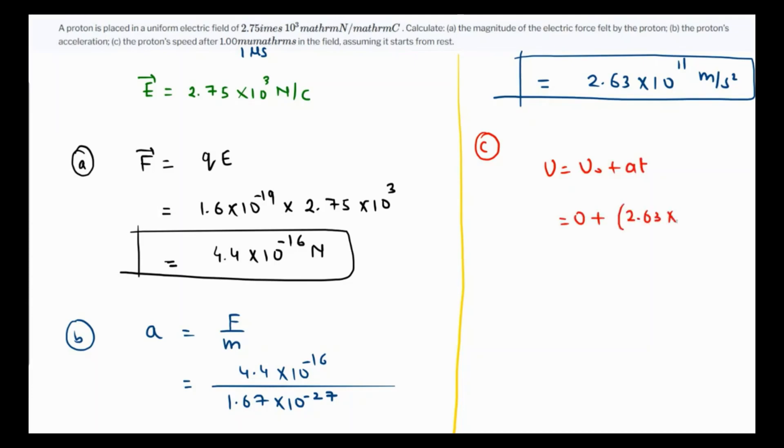The acceleration we just found is 2.63 times 10 raised to 11, and time is 1 microsecond, which is 10 raised to minus 6 seconds. So this is coming as 2.63 times—11 minus 6 is 5—so 10 raised to 5.